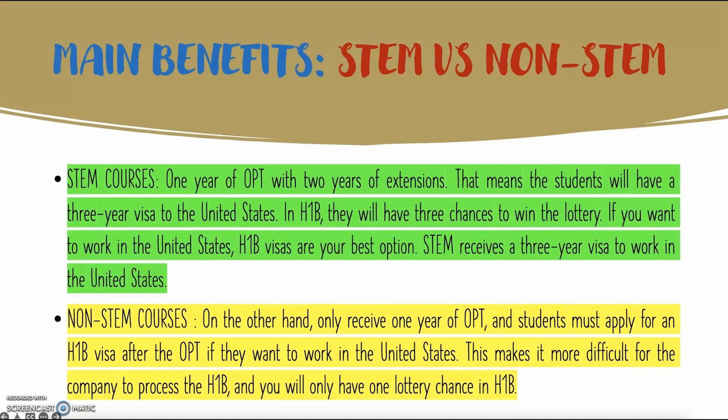For non-STEM courses, you can apply for the OPT period after completing a bachelor's or master's degree, but you only receive a one-year OPT period. There is a key difference: non-STEM students do not get the two-year STEM OPT extension, unlike STEM course students.